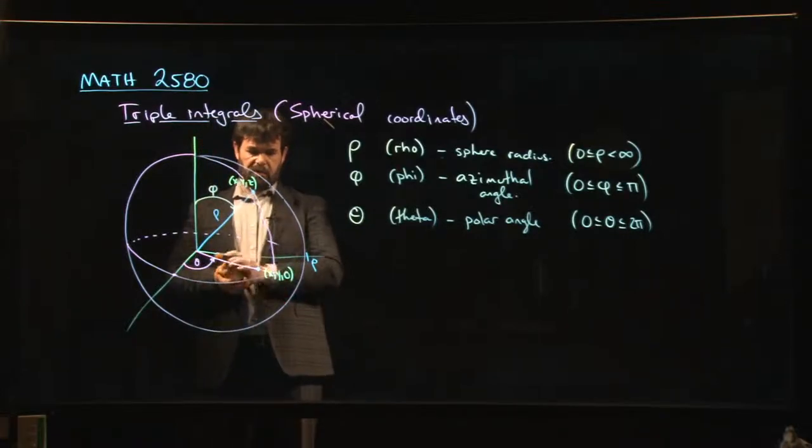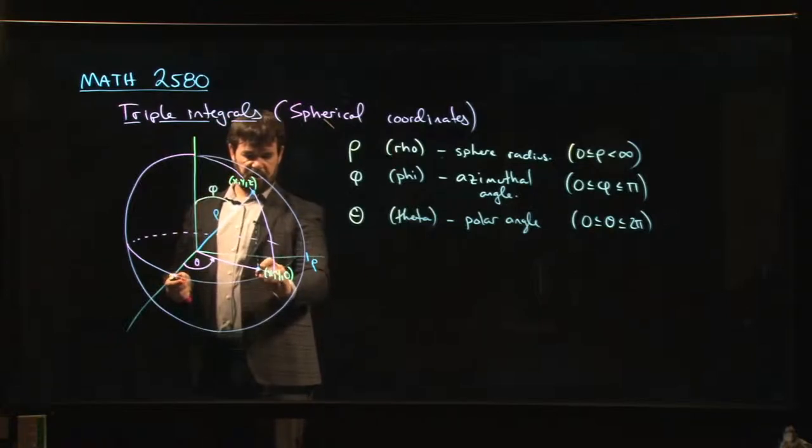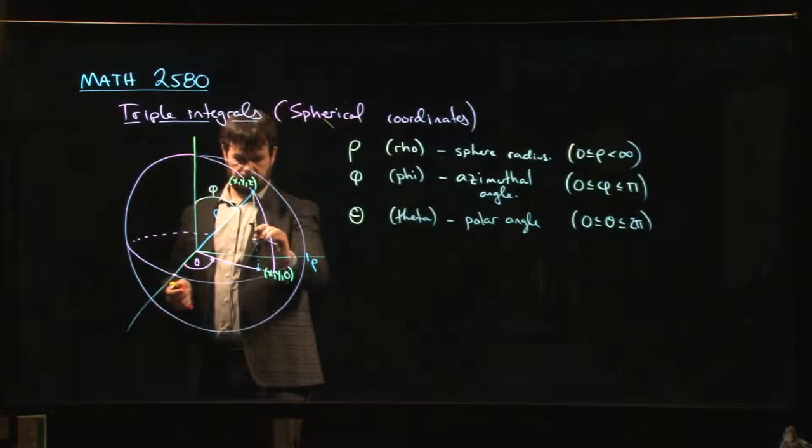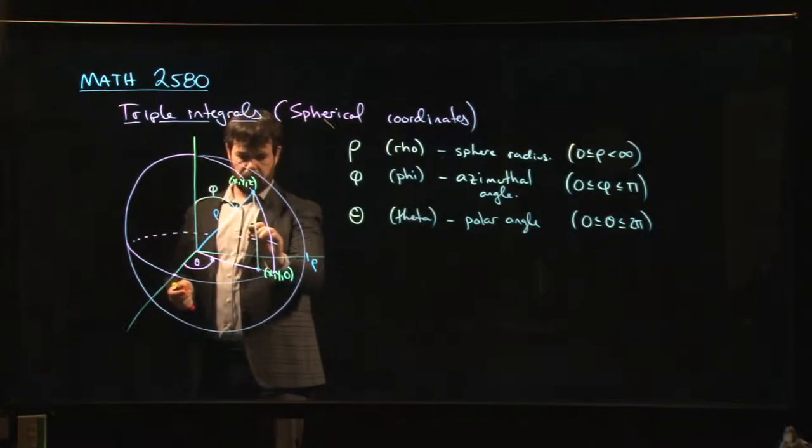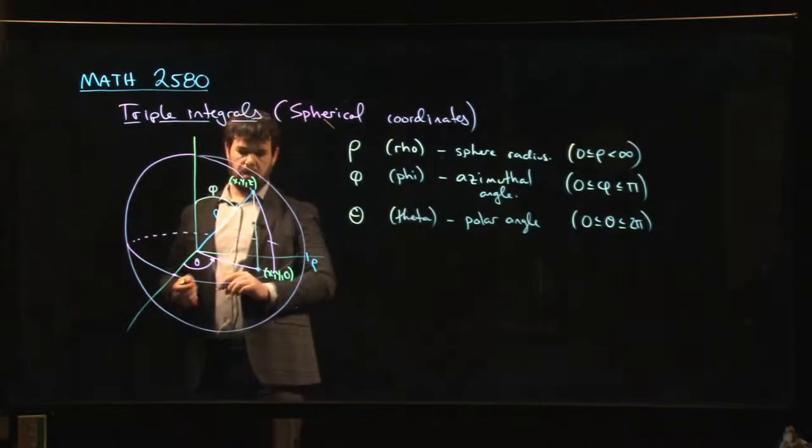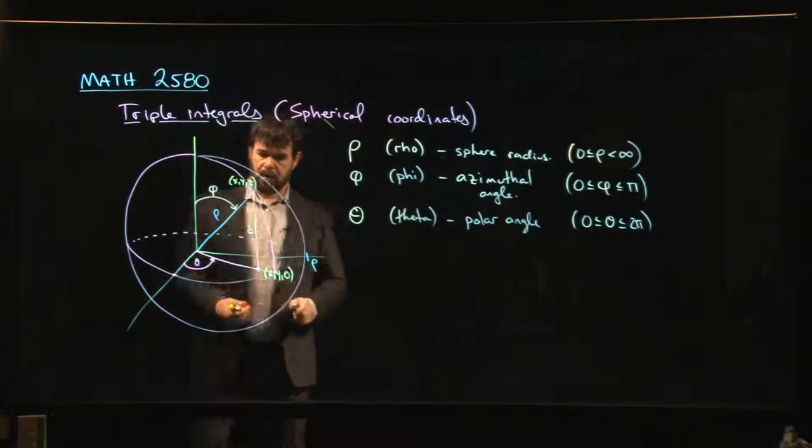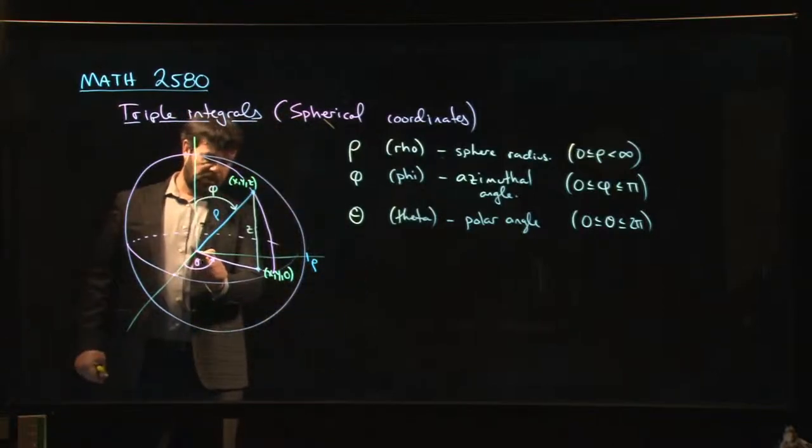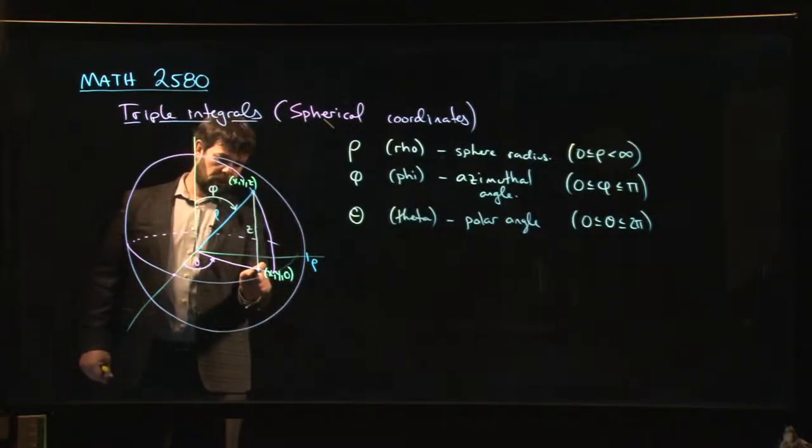What you can notice is that z is the distance between these two points. It's the distance of this side here. This line down here, this is in the x, y plane,